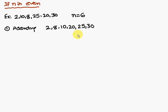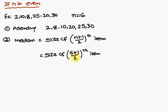So we have to write in the ascending order. The next one median formula size of n plus 1 by 2th item. n is equal to 6. Therefore, 6 plus 1 by 2th item. That is nothing but 3.5 item.